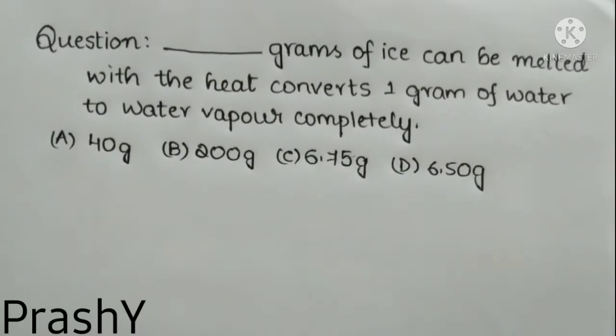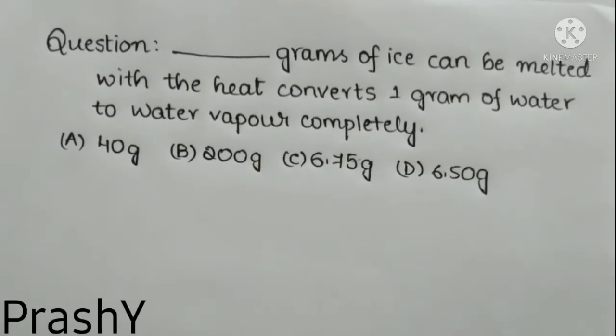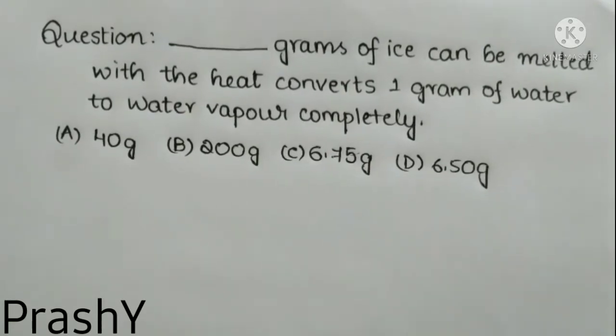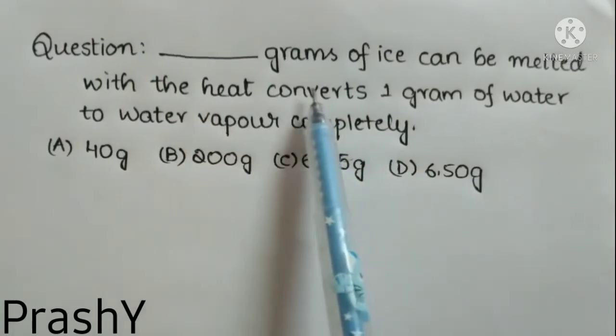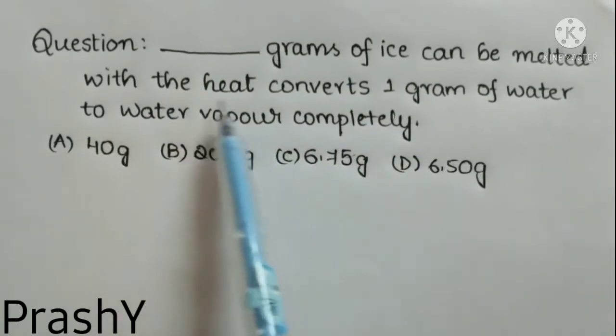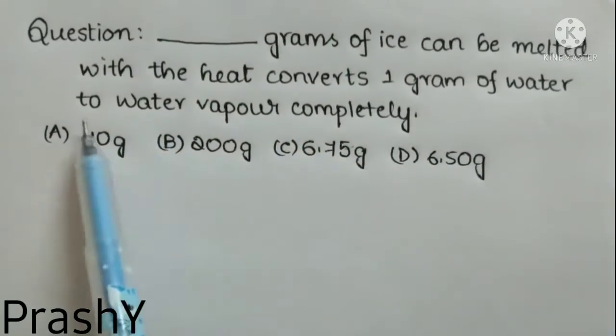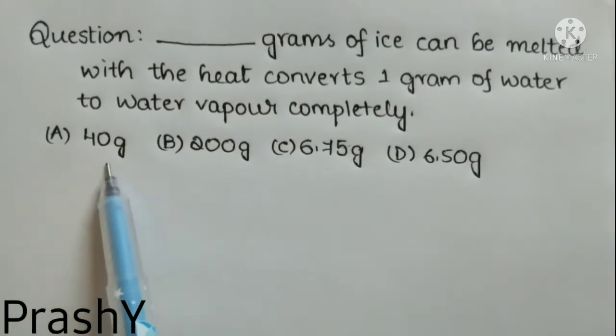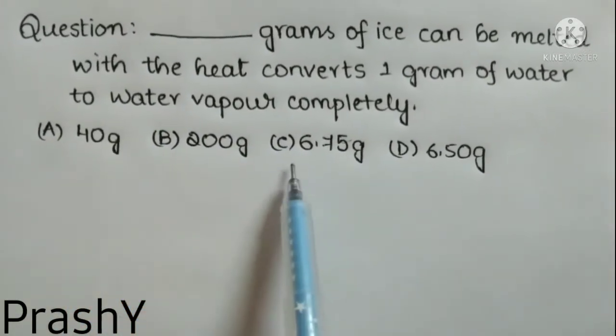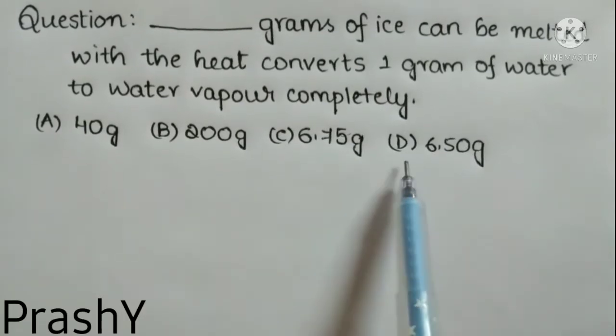Welcome back to our channel, Branch Learning is Fun. In this module, we are going to discuss a problem in physics from the topic heat. So let's hear the question: X grams of ice can be melted with the heat that converts 1 gram of water to water vapor completely. Option A: 40 grams, Option B: 800 grams, Option C: 6.75 grams.